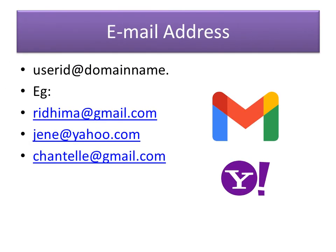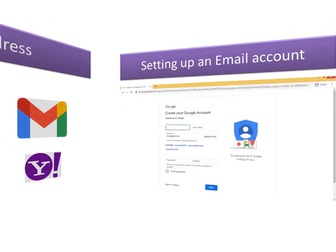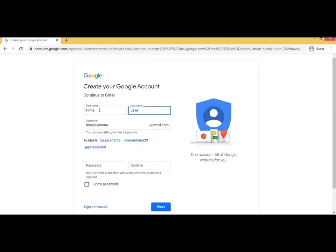An email address consists of two parts: the first part is your user ID — usually your name — and the second part is the domain name, which is the server or email service provider. These two are separated by the at-sign symbol, used by Ray Tomlinson. For example: ridima@gmail.com, jenny@yahoo.com, or chantel@gmail.com.